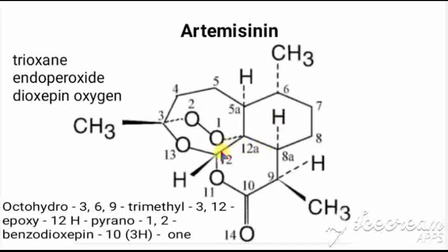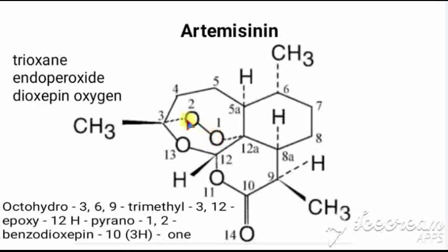Now let's look at the structure of artemisinin. It has a six-membered heterocyclic ring with oxygen as the heteroatom, called pyranose. It also has a seven-membered ring — one, two, three, four, five, six, seven — and if that seven-membered ring has only one heteroatom which is oxygen, it is called oxepine. But here it has two oxygens in the seven-membered heterocyclic ring, so it is called dioxepine.